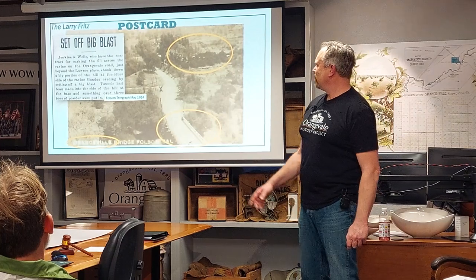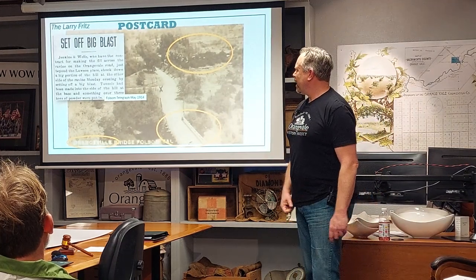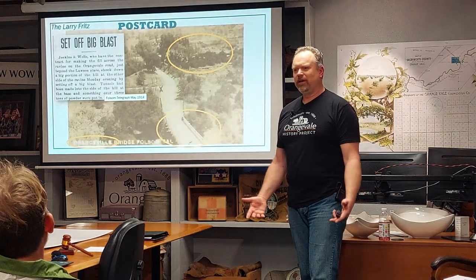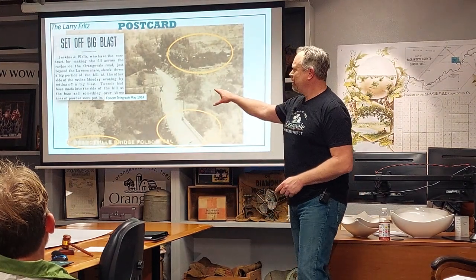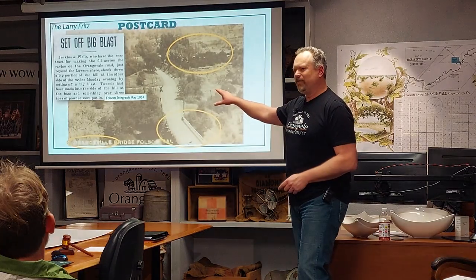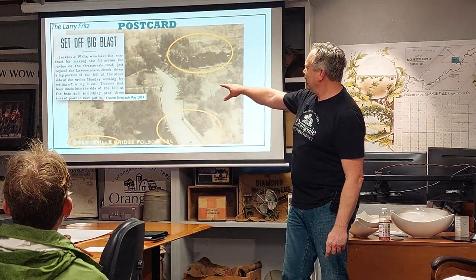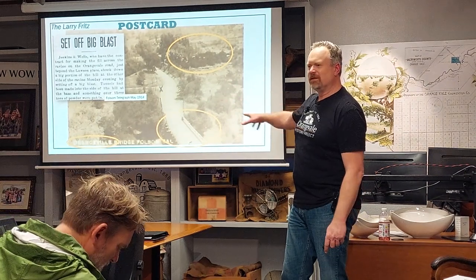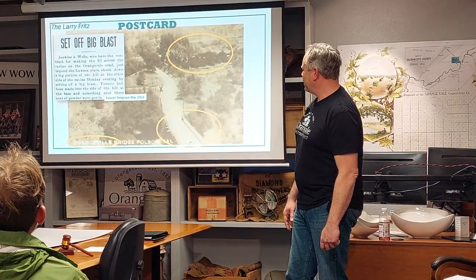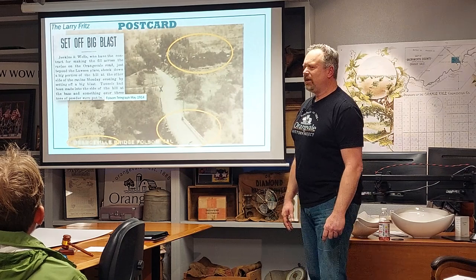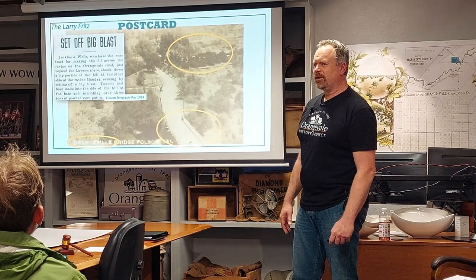In May of 1914, this article talks about how the contractor who won the bid to fill in that ravine and get rid of the bridge tunneled into the hillside right below where this picture was taken, blew out a bunch of fill to use to make the culvert, and then filled in that ravine. A really neat postcard that helped fill in the gaps on these bridges.